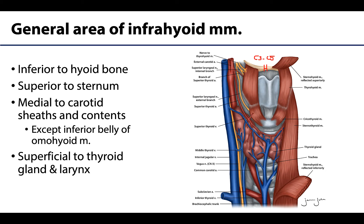The infrahyoid muscles will also be superior to the sternum, so not projecting into the thorax region. The muscles will also be medial to the carotid sheath and its contents — there would be a carotid sheath on each side. Lastly and importantly, these muscles will all be superficial to the thyroid gland and the larynx, so one has to reflect these muscles to gain access to or view those deeper structures.